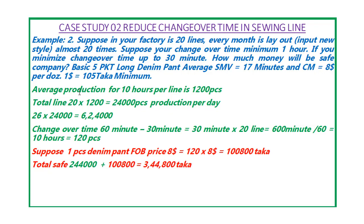The average production for 10 hours per line is 1,220. In the factory, there will be 1 line of changeover time, and in the factory there will be 2 lines of changeover time. The total cost of time will be 26 to 24 thousand. The total cost of time will be 100,000,000,000.